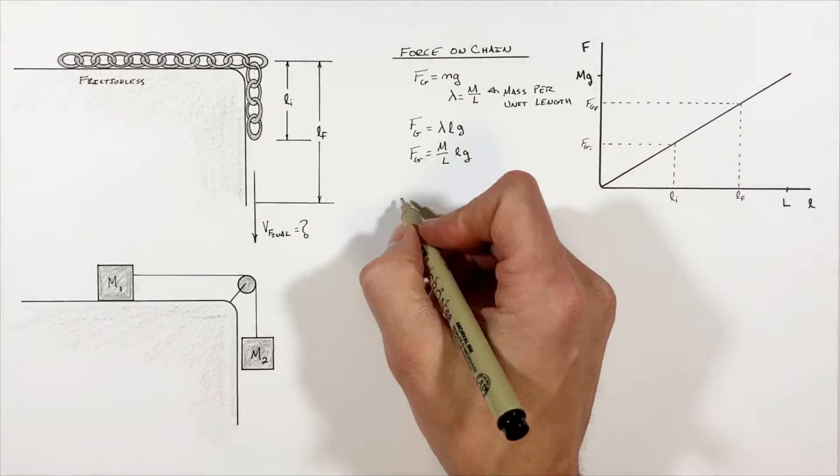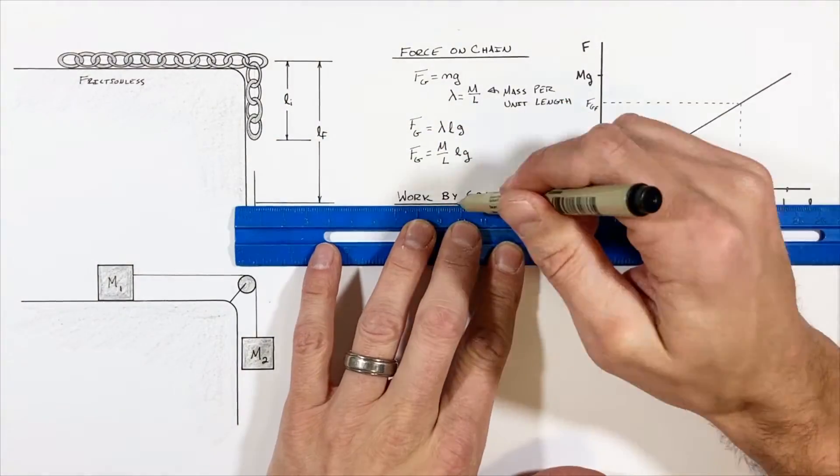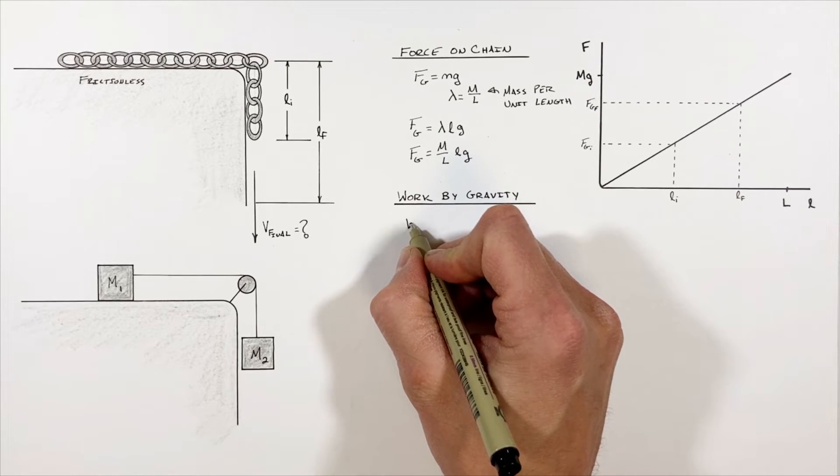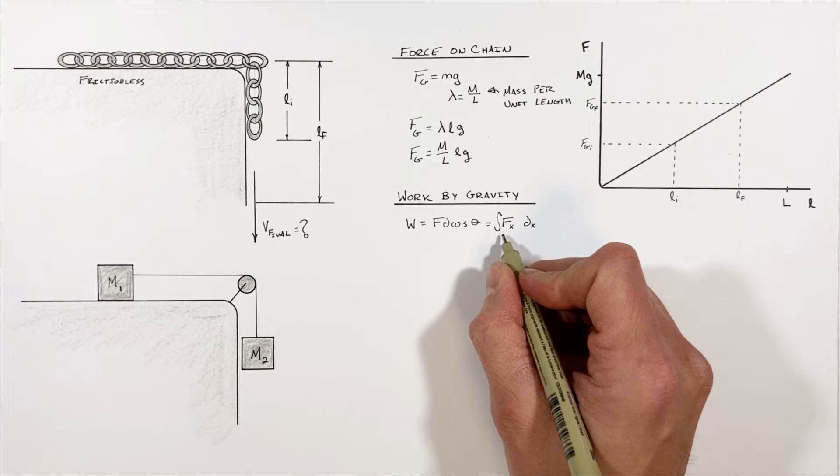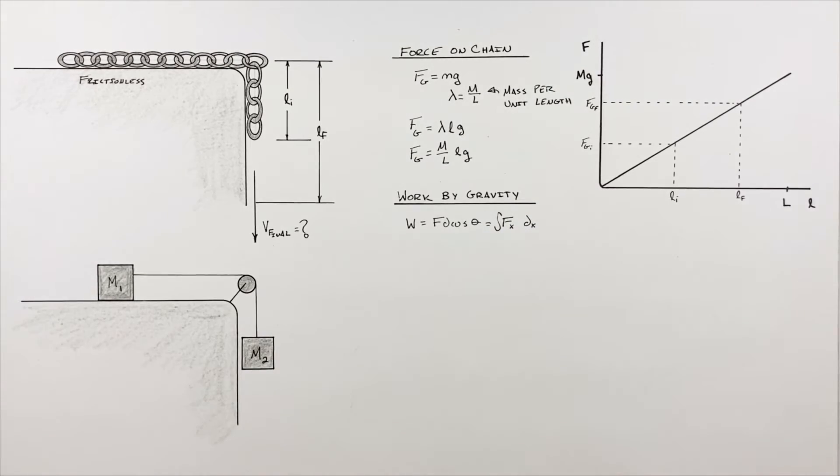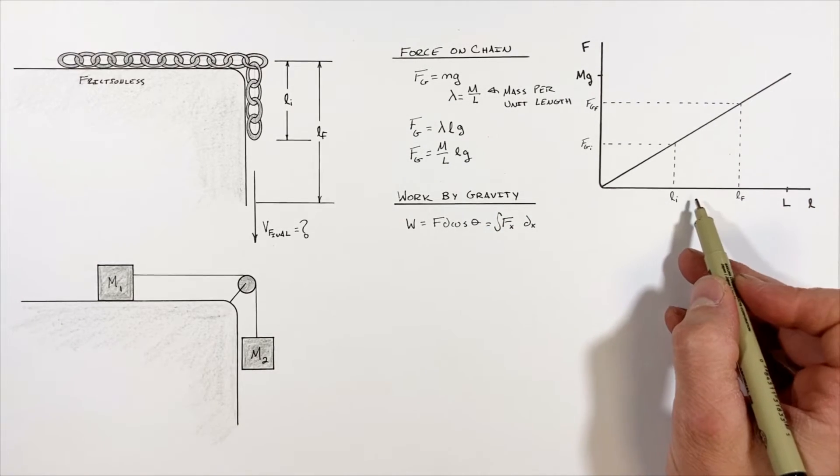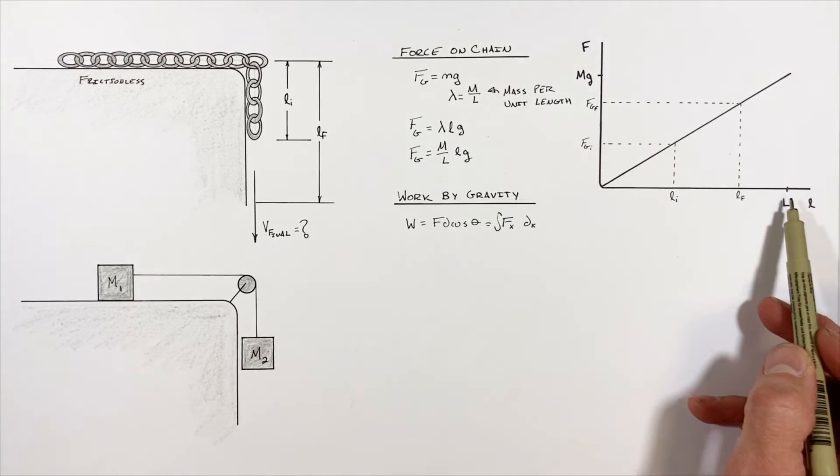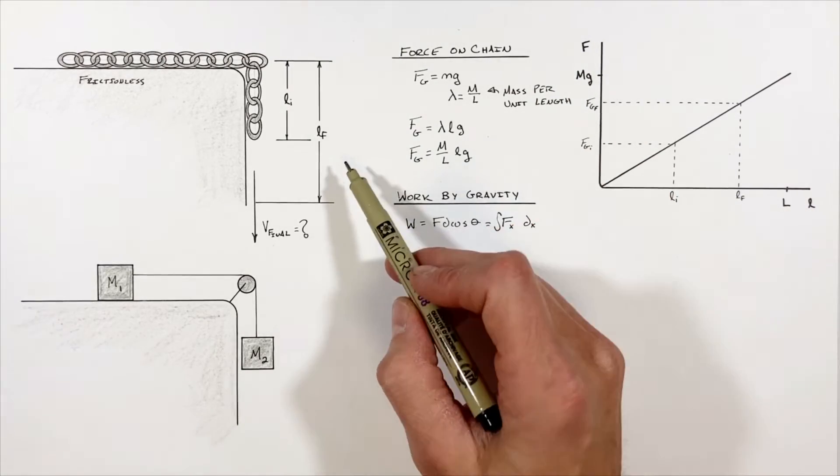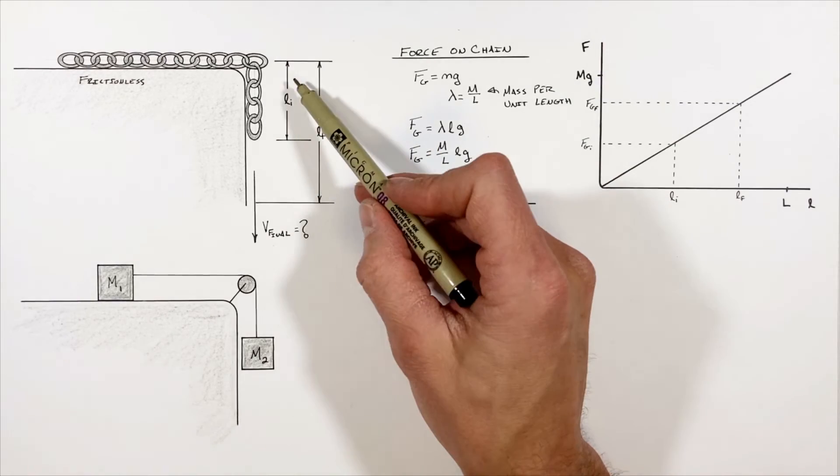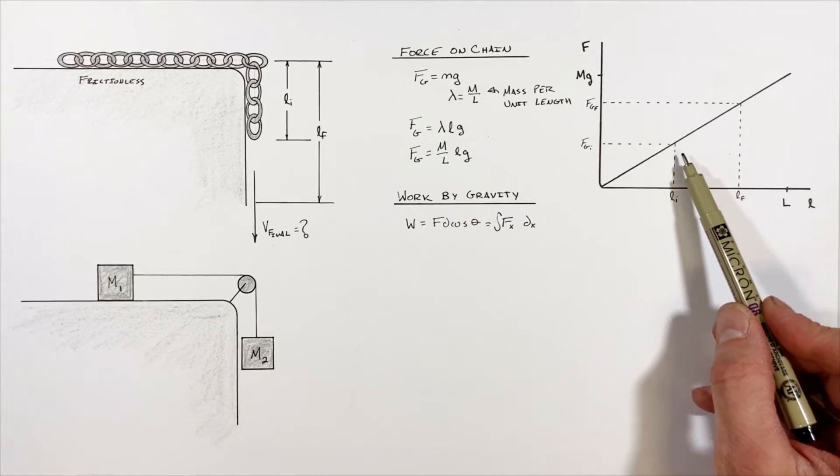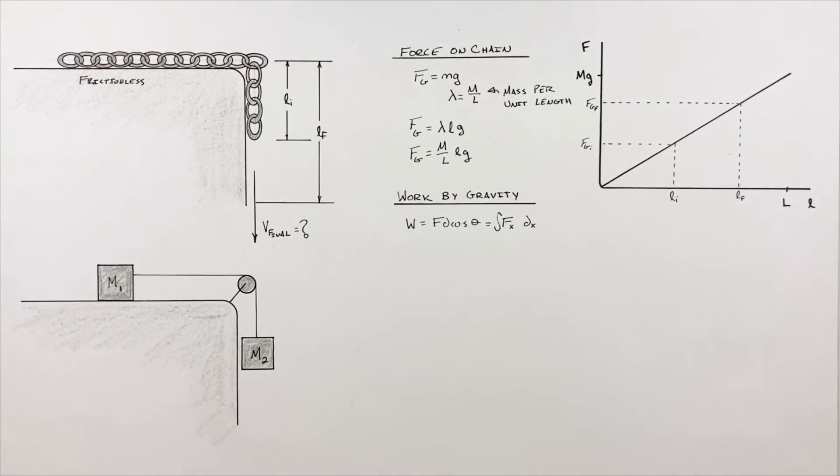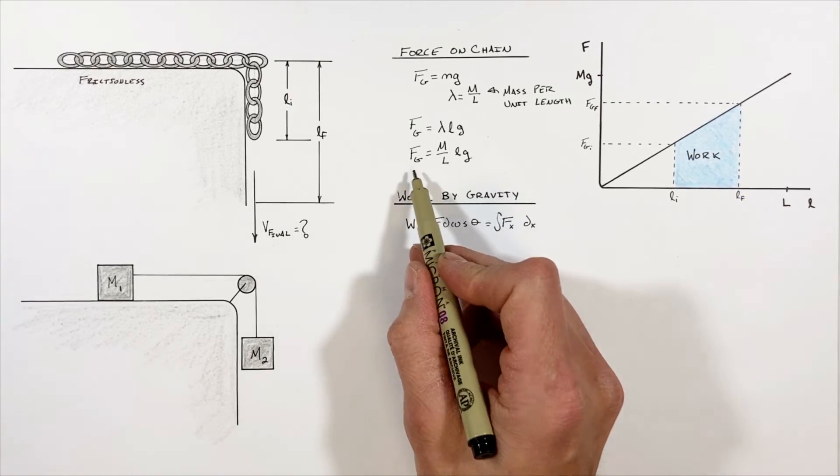Now work by gravity is given by, or if you want to apply calculus, the infinite sum of f of x dx. And realize what we're looking at in this graph is a function that's showing us the force as a function of position. So really the work as the hanging chain goes from this initial length Li to some final length Lf is given by the area underneath this curve.